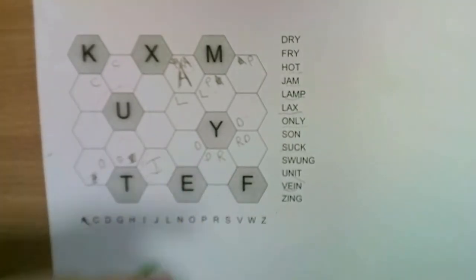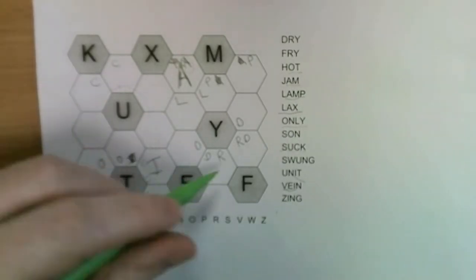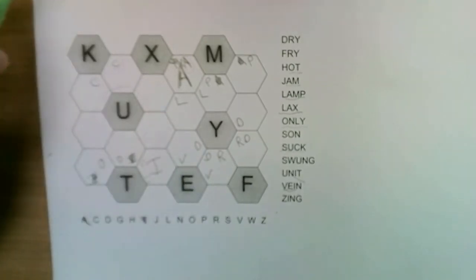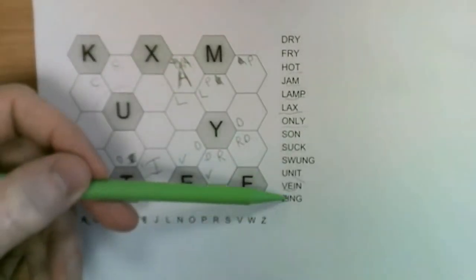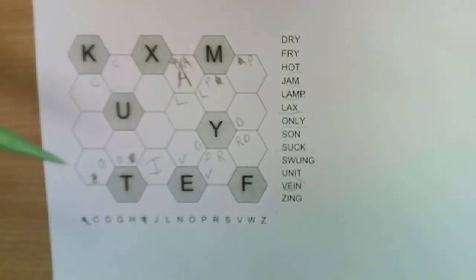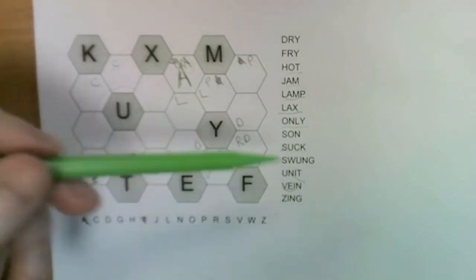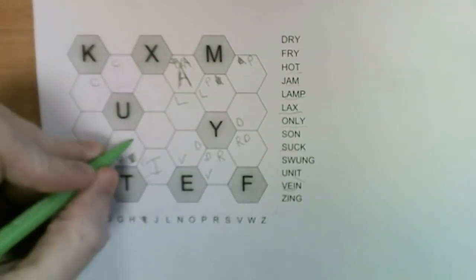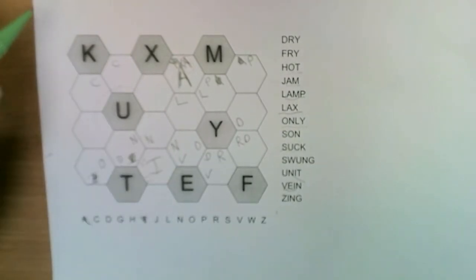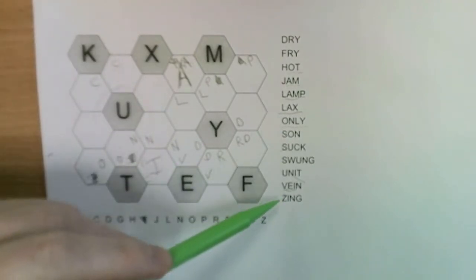Then we have the V, so the V has to go there or there. Let's see if the V appears anywhere else. Nope it does not. After the I we have an N, so the N must go here, here or here.